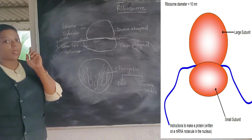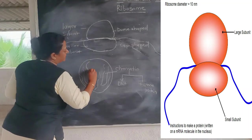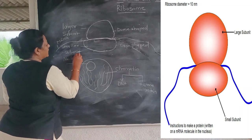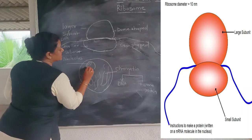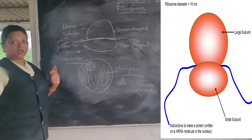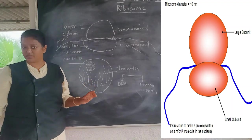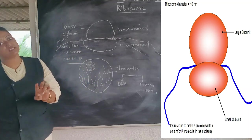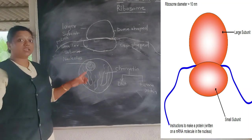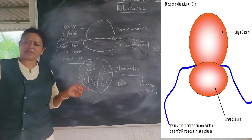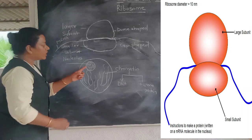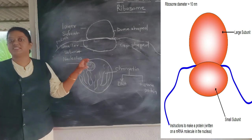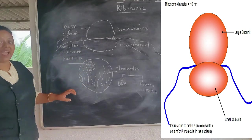Inside the nucleus there is also a structure called the nucleolus. One or two nucleoli can be present in a nucleus — it is not always necessary to have only one. The nucleolus is a dense, spherical structure made up of RNA and protein.